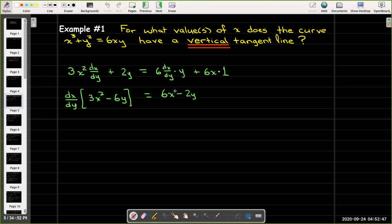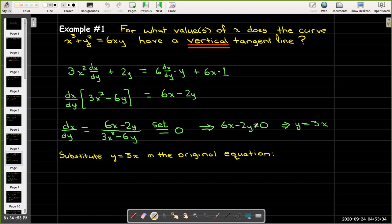So collecting the terms with the dx/dy and factoring it out, I get dx/dy in brackets 3x² - 6y equals 6x - 2y. And solving for dx/dy I get (6x - 2y)/(3x² - 6y) and I'll set that equal to zero. And now we want to remember that a fraction is only equal to zero if the top equals zero and the bottom does not equal zero. And so that would tell me that 6x - 2y must equal zero, which means that y equals 3x.